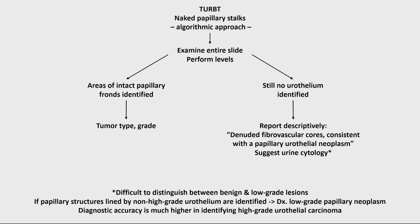Very helpful in narrowing down the diagnosis further is to suggest urine cytology. In some institutions, urine cytology is performed at the same time as tissue sampling, but in others it isn't. So suggesting urine cytology may help you narrow down the diagnosis — because think about this: where do those denuded neoplastic urothelial cells go? They may still be swimming around in the urine, and urine cytology may be able to pick up on at least some of these neoplastic cells.